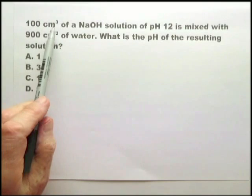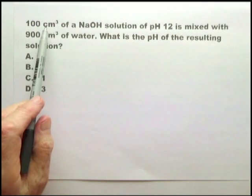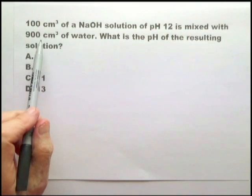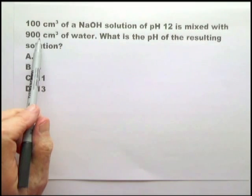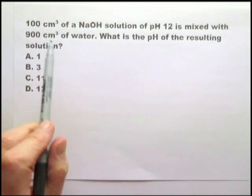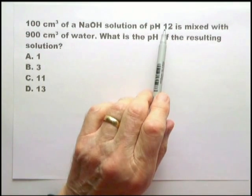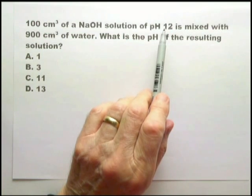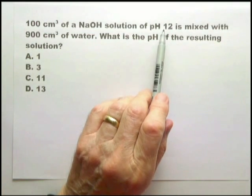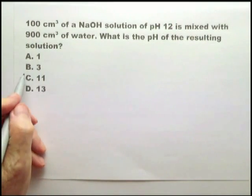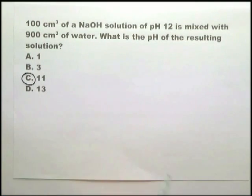If you're mixing 100 centimeters cubed of sodium hydroxide solution with 900 centimeters cubed of water, you are diluting it 10 times. Therefore, the pH would move by one unit. In this case, it's going to move down. It's going to be less alkaline. And therefore, it moves from pH 12 to pH 11. Again, another one that should take you no more than 10 seconds.